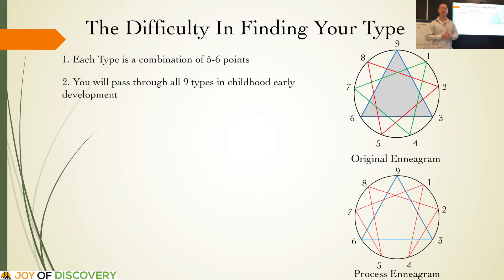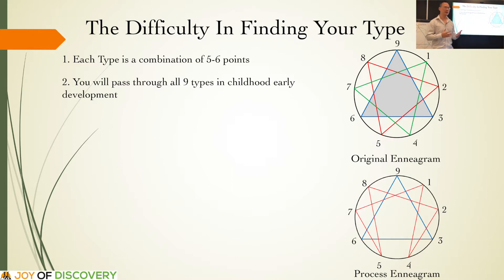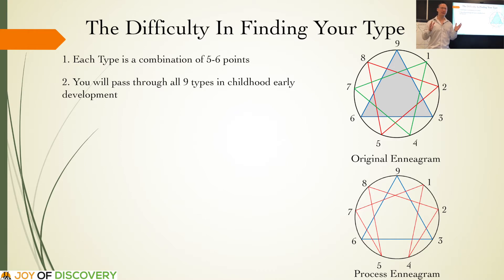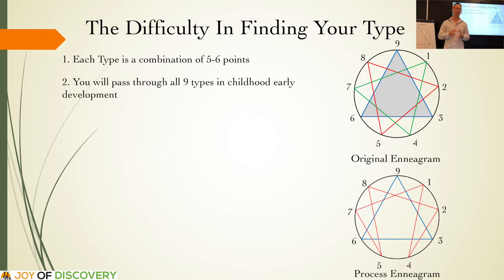Another reason it's so difficult to find your type: you will pass through all 9 types in childhood and early development. Some childhood psychologists have looked at the Enneagram and suggest you start at point 9 and can move in an anti-clockwise direction through to 1 between ages 0 to 5. So when we go through the 9 different types, you will probably resonate with quite a lot of the attributes across types. That's natural because you will have parts of those personalities in yourself that you may still use in the world.